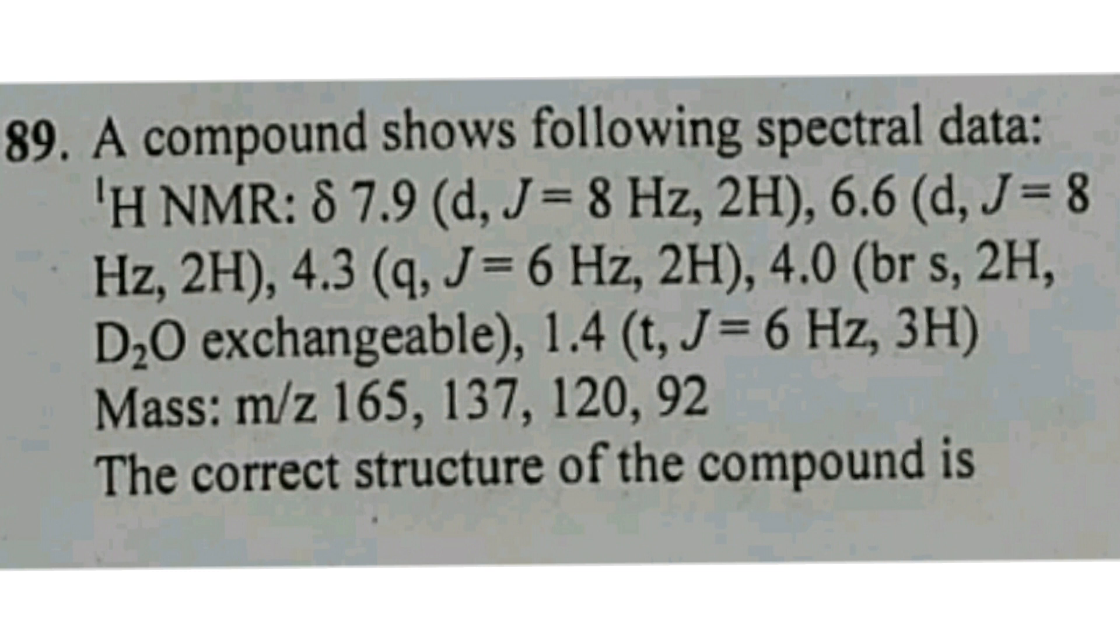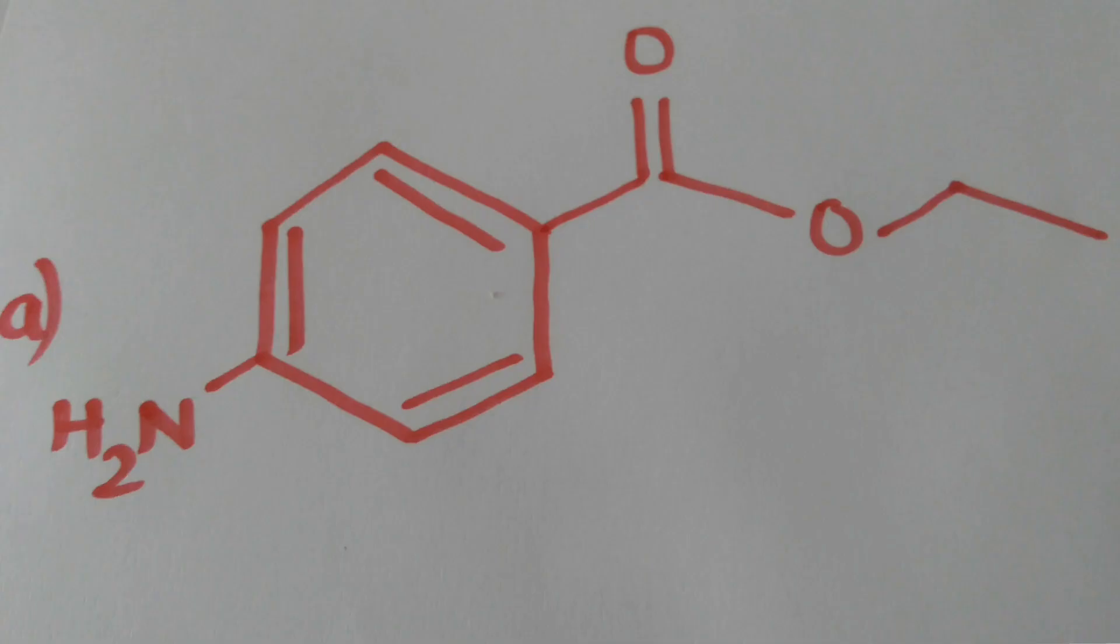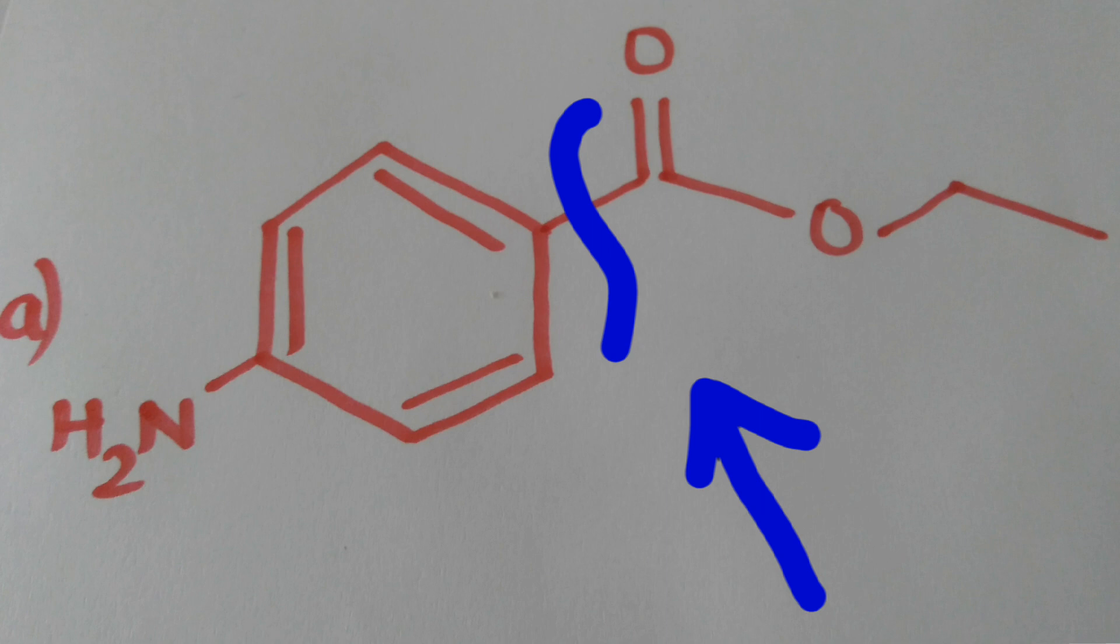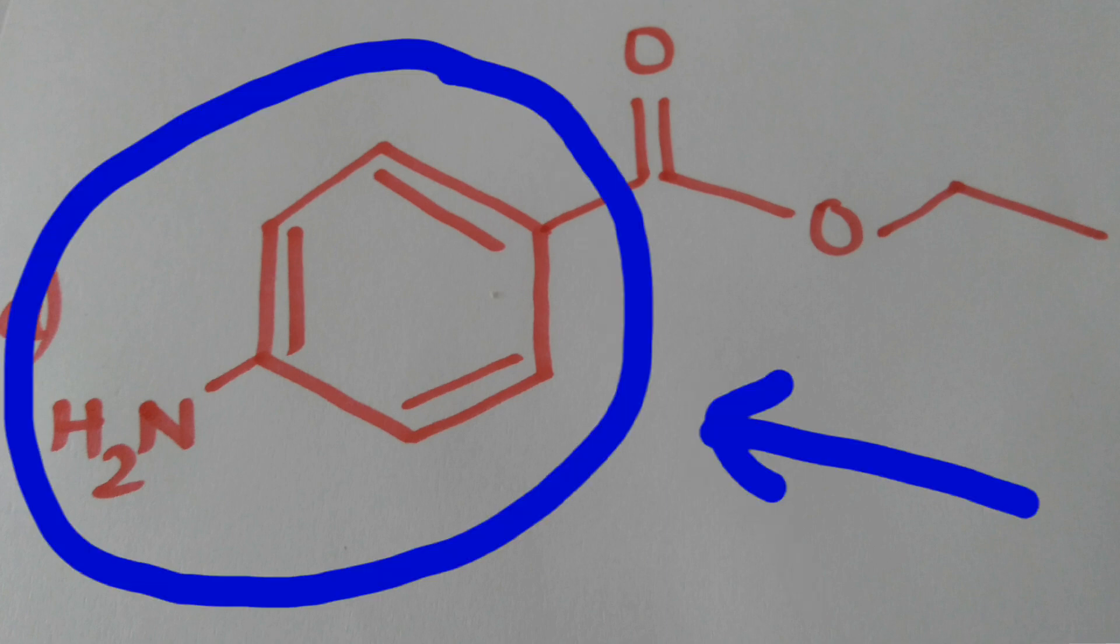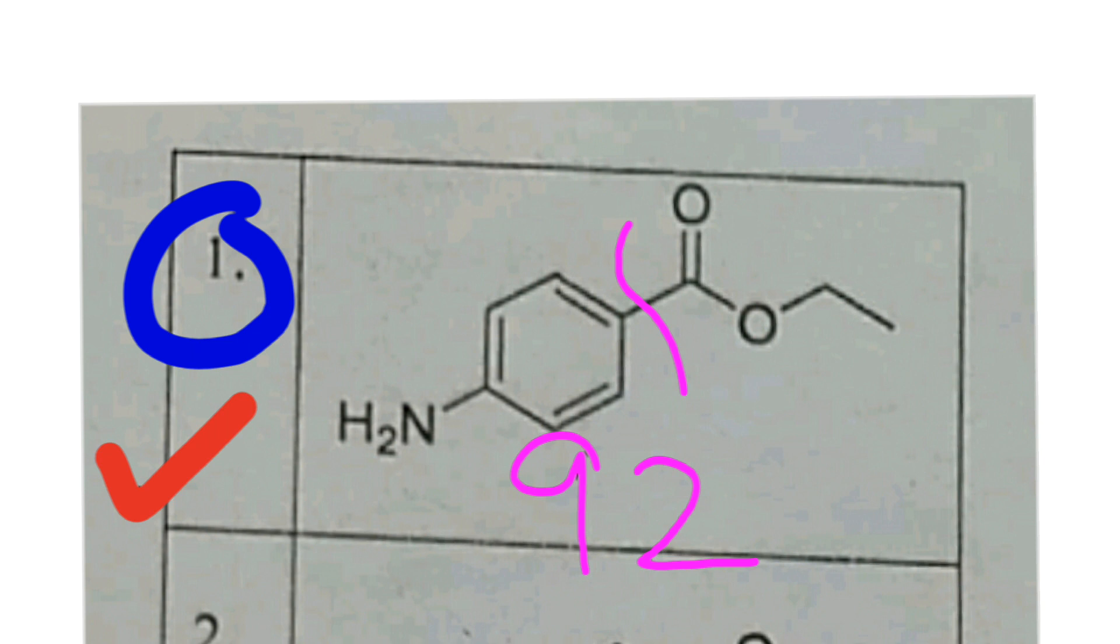The key lies in the mass data. Considering option 1, when you break the bond here and calculate the mass of this fragment, it equals 92, which is not possible in the case of option 2. Therefore, option 1 is the right choice.